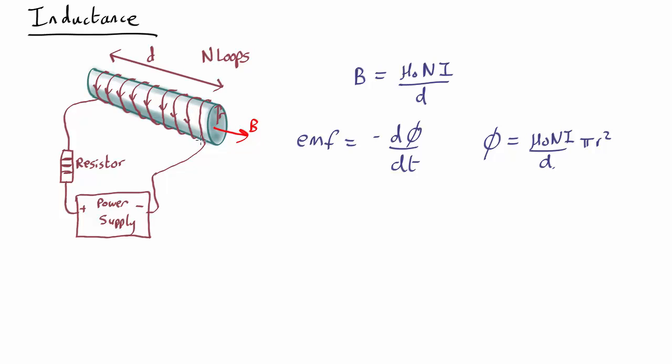If we have n loops, as we actually do, you have to multiply by n because you get this n times. So the electromotive force is going to be minus the rate of change of that. Now everything here is going to remain the same except for the current, so we can take them all out. So we get μ₀n²πr²/d times dI/dt. We know this is going to point in a direction opposite to this, so we put a minus sign in front, opposing the changing current.